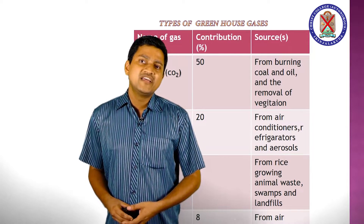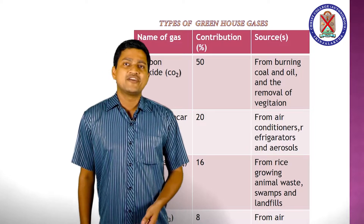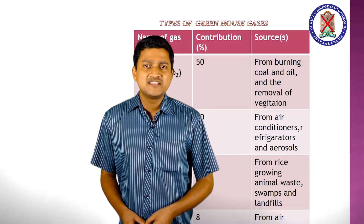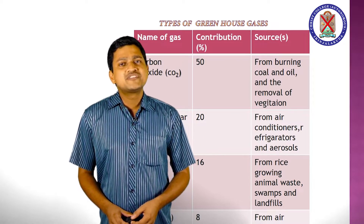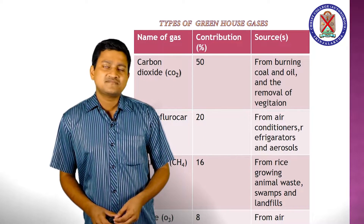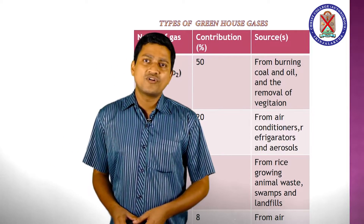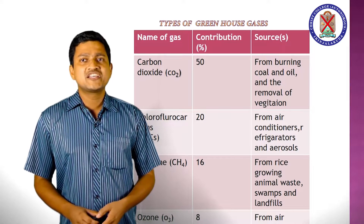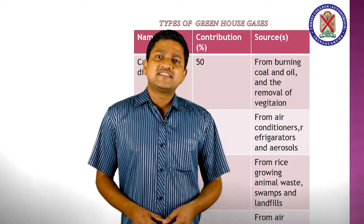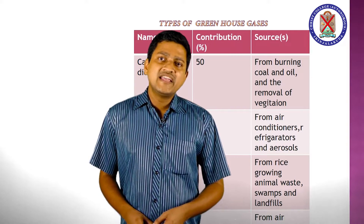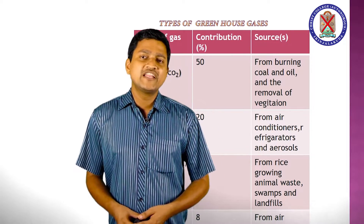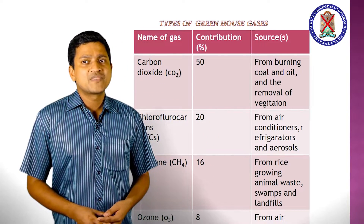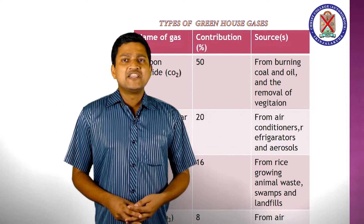Burning of coal, oil, and removal of vegetation are the main sources for increasing the amount of carbon dioxide. The next greenhouse gas is chlorofluorocarbon, that is CFC, and its contribution is 20 percent. The sources of CFC include air conditioners, refrigerators, and aerosols. The third greenhouse gas is methane, and its contribution to the greenhouse effect is 16 percent. The sources of methane include rice growing and animal waste.